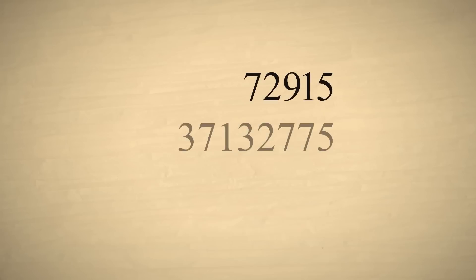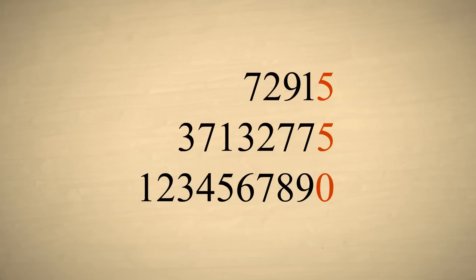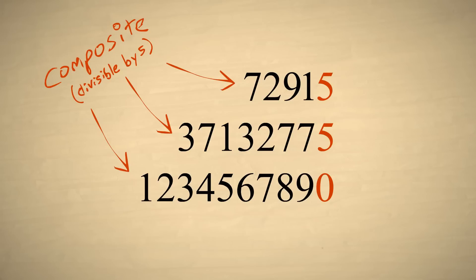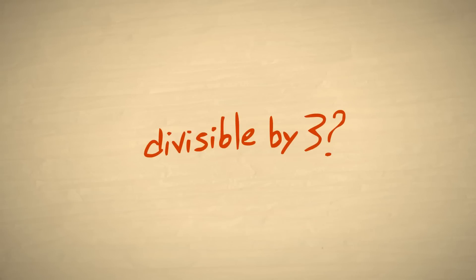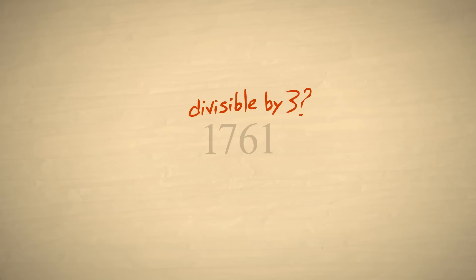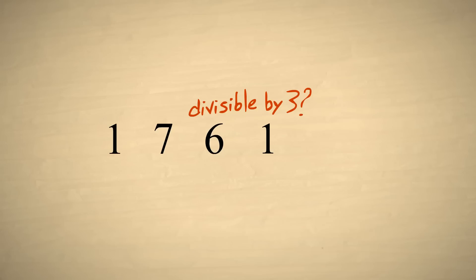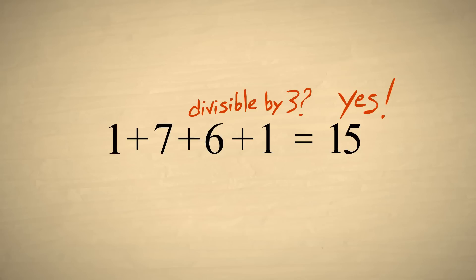Also, any number which ends with five or zero is divisible by five, and is thus composite. In addition, there is an interesting trick for determining if a number is evenly divisible by three: a number is divisible by three if the sum of its digits is divisible by three. For example, the number 1761 is composed of digits one, seven, six, and one, whose sum is fifteen. Since fifteen is evenly divisible by three, then so is 1761.